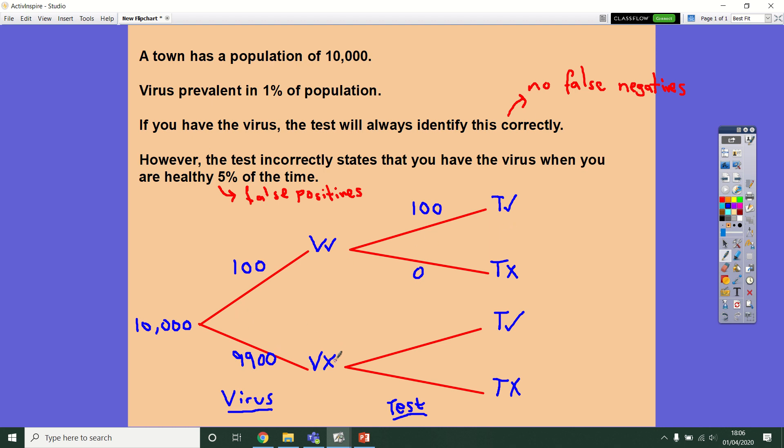If you don't have the virus though, there's a 5% chance the test will be positive, falsely. And 5% of 9,900 is 495. Subtract that from your 9,900. That leaves 9,405 for those correctly told that they don't have the virus.